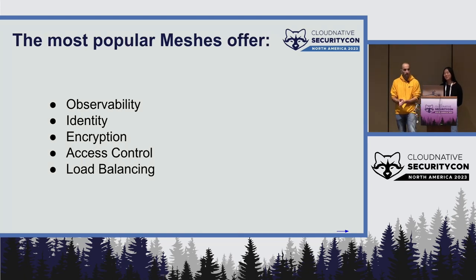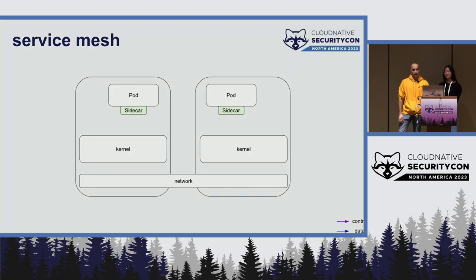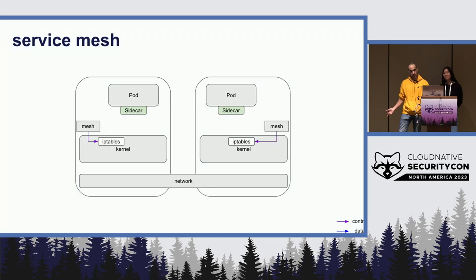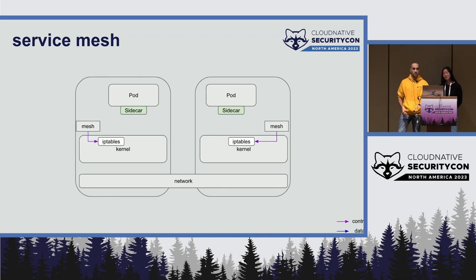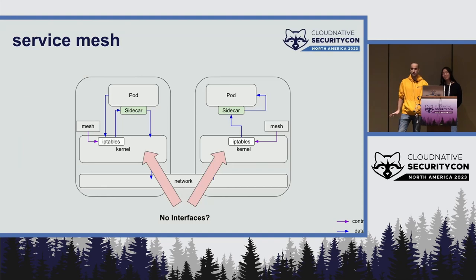The most popular service meshes offer observability, identity, encryption, access control, load balancing, and a bunch of other cool features. For a concrete example: the common logic lives inside a container in the pod — the sidecar proxy. When one pod wants to talk to another, the mesh uses IP tables to redirect all the traffic transparently through the sidecar proxy. Because service mesh is not a CNI plugin, it has nothing to do with giving pods interfaces — it assumes connectivity is already there.